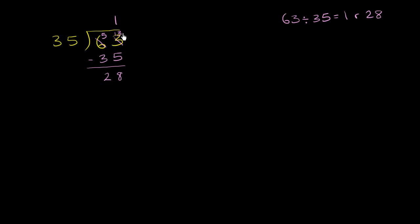And to do that, I essentially have to add a decimal here, and then just keep bringing down decimal places to the right of the decimal. So 63 is the exact same thing as 63.0, and I could add as many zeros as I might want to add here.